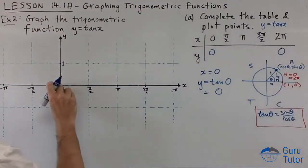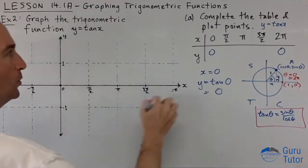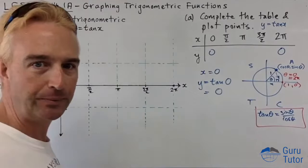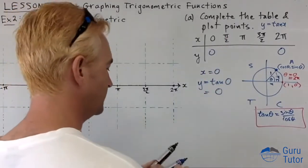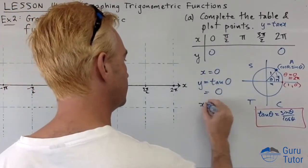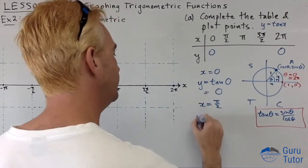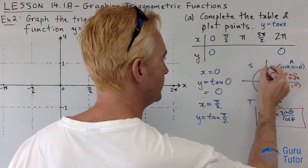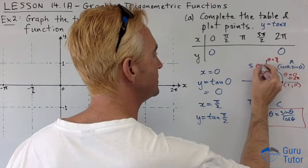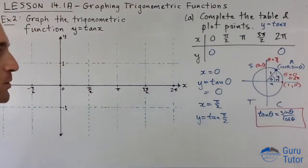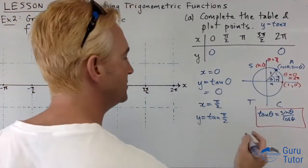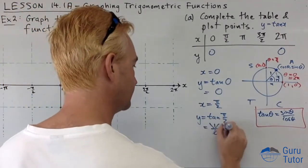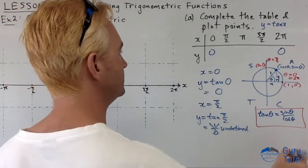Let's plot (0, 0) and (2π, 0). For x = π/2, the coordinates on the unit circle are (0, 1), so tan(π/2) = y/x = 1/0, which is undefined. We'll mark that with an x in the table.